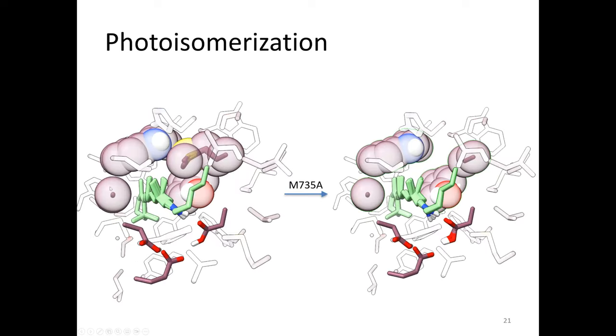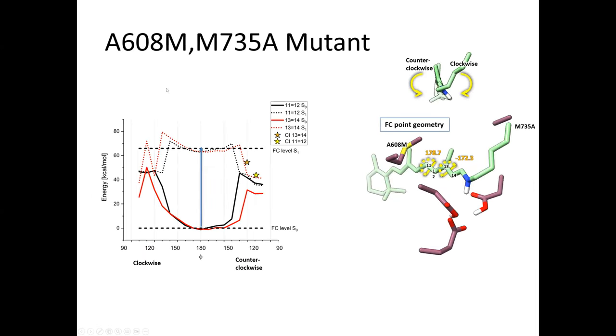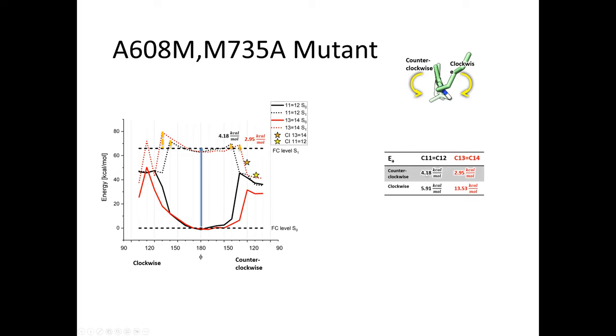When we look at the data, indeed the 13-14 double bond has a slightly smaller barrier which is however still considerable - it's 4.5 kcal/mol. For 11-12 it's almost 6 kcal/mol. Then we wanted to go one step further and we propose also to mutate a second residue. The residue that you saw here on the left side is an alanine. Now we replace this alanine with methionine, basically introducing a bulky group on this side and a small group on this side. In this double mutant we could observe that now the barrier for the 13-14 double bond isomerization is significantly smaller than before and it's also still smaller than 11-12. This is our proposal that we have shared with our experimental collaborators. We propose to synthesize this double mutation and then we might be able to change the selectivity of the isomerized bond.